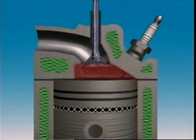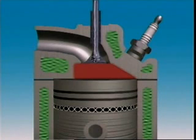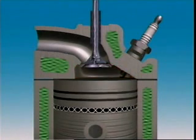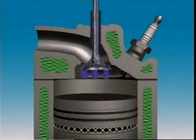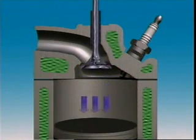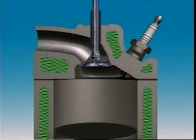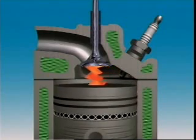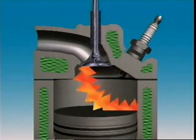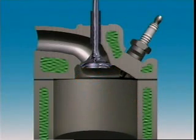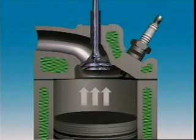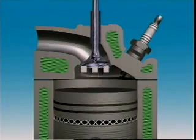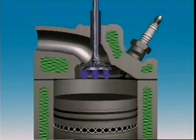The bathtub combustion chamber is oval shaped like an inverted bathtub. Valves are mounted vertically and side by side, making them simple to operate. The plug is to one side, creating a short flame path, which all helps increase turbulence.